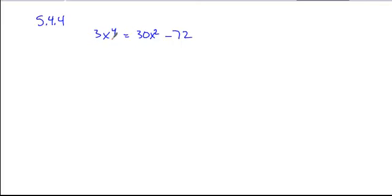In this problem we see multiple terms with x's, so that tells us move all the terms to one side of the equation. So we'll subtract 30x squared from both sides and add 72 to both sides.